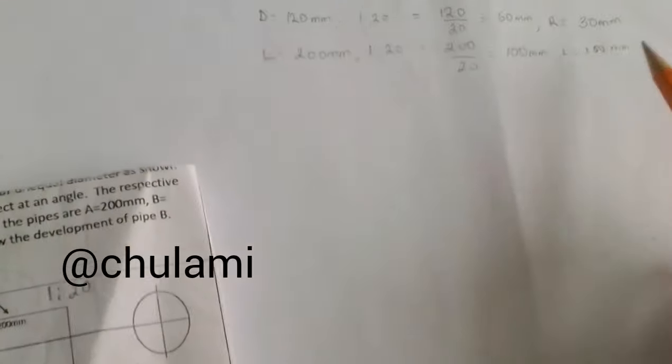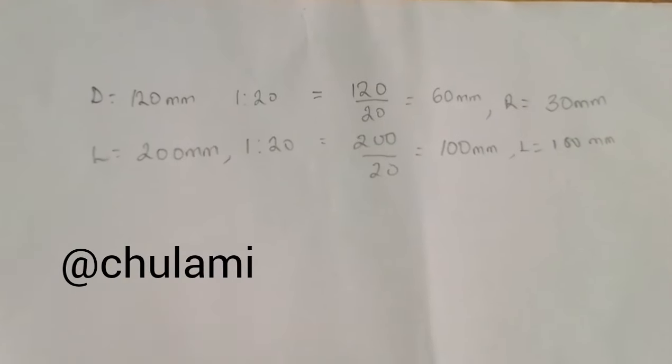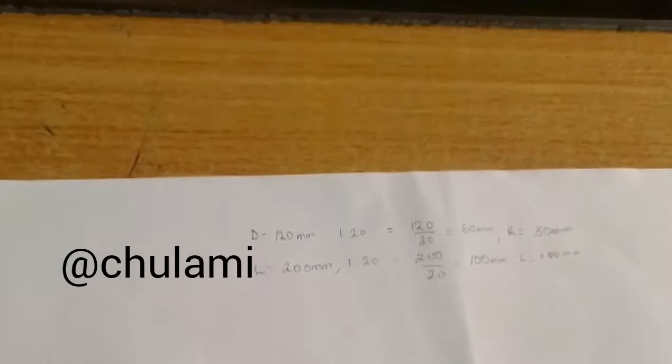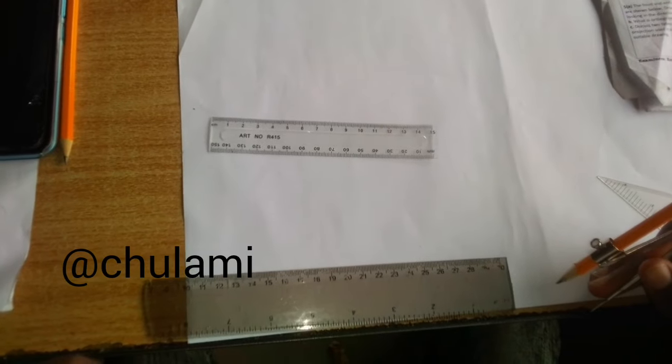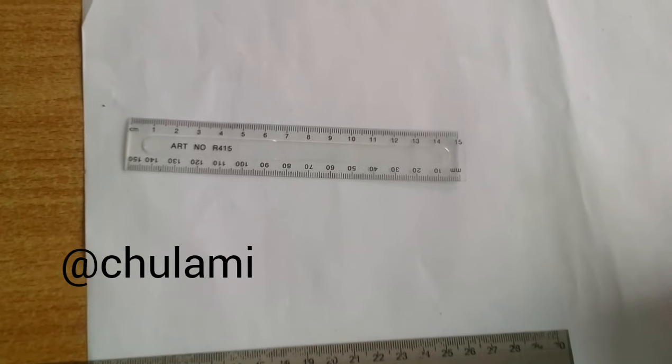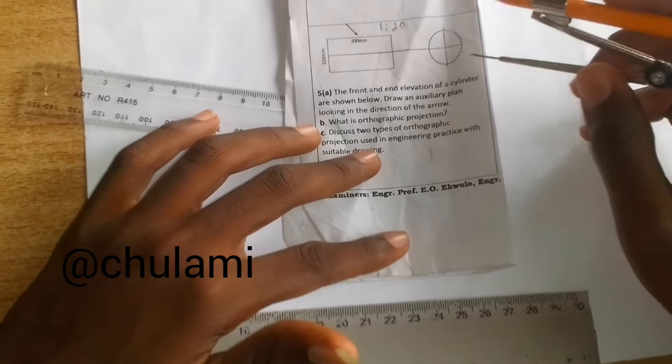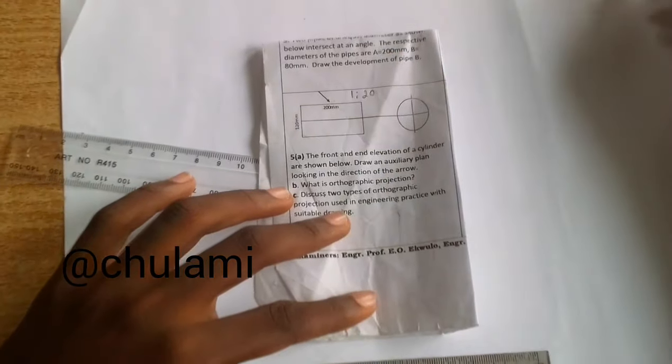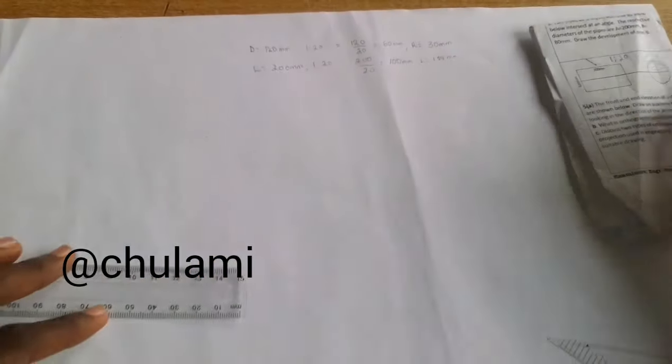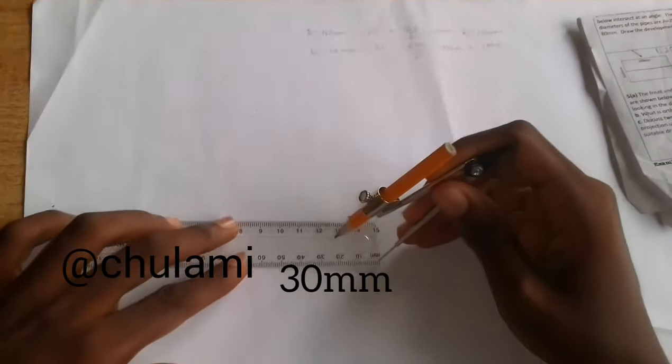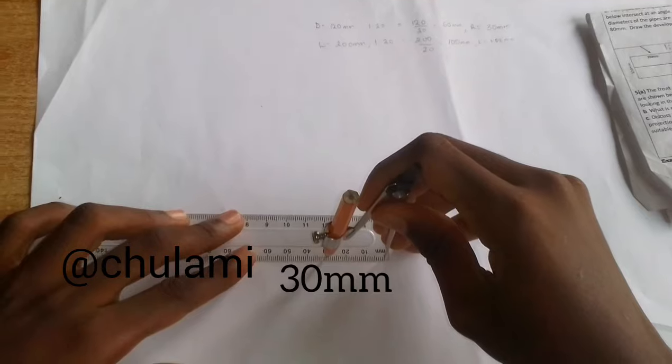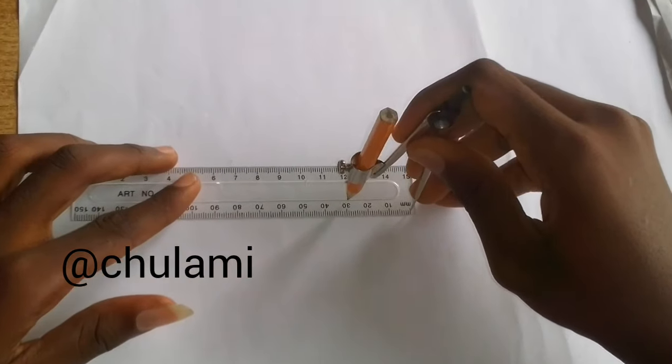That means your radius will then be equal to 30mm. That's the scale. So now, for this part of the rectangle which is 200mm, we also scale it too.